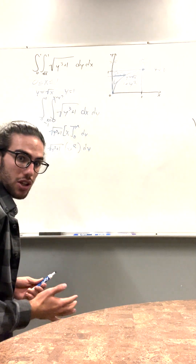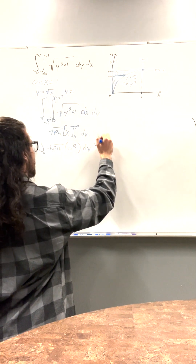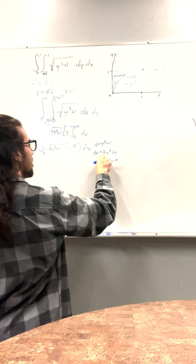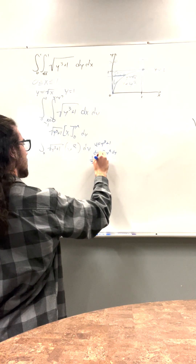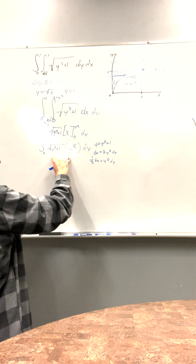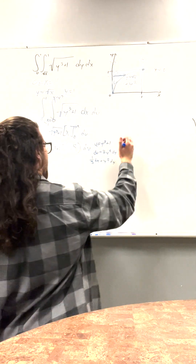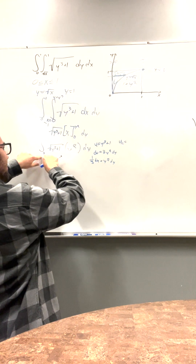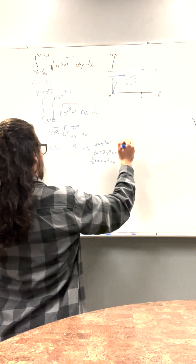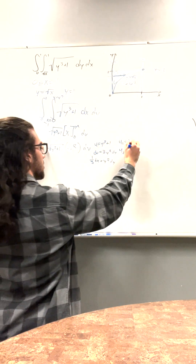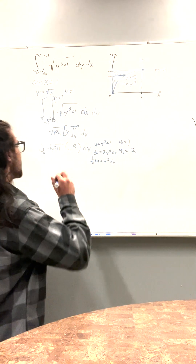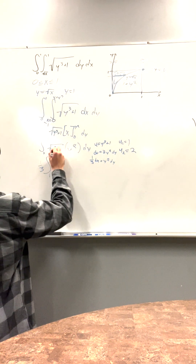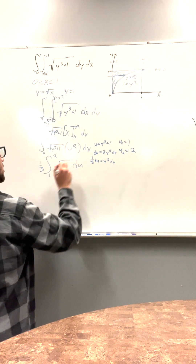So here we can do a u-substitution. u is equal to y to the third plus 1. du is equal to 3y squared dy, so bring the 1/3 out. Now we can substitute u and du. We'll reevaluate our bounds first. When y is equal to 0, we plug in to get u equal to 1. And when y is equal to 1, u is equal to 2. So now we can reevaluate our integral with u. We cannot forget this 1/3 — bring that out as a constant. The integral goes from 1 to 2 of square root of u, du.